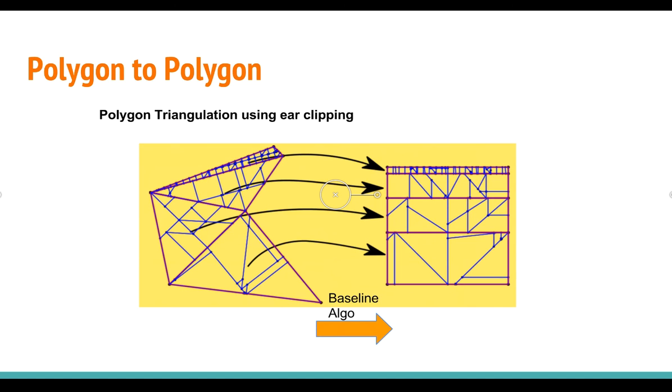Next, I'm going to talk about polygon-to-polygon. If you recall from Chris's lecture, he talked about polygon triangulation using ear clipping. This is the same. We'll basically triangulate the polygon into different triangles and apply the baseline algorithm to each of the triangles that we got.